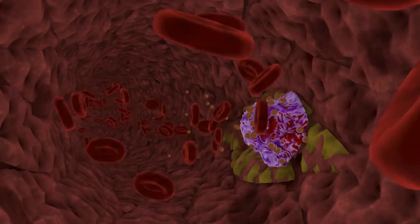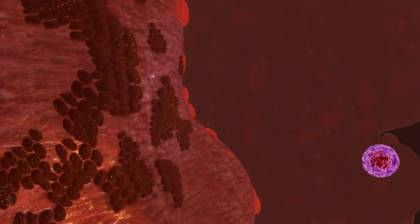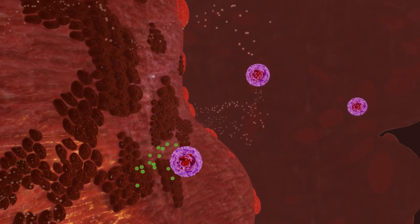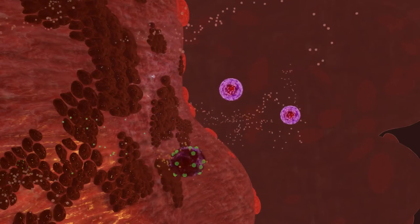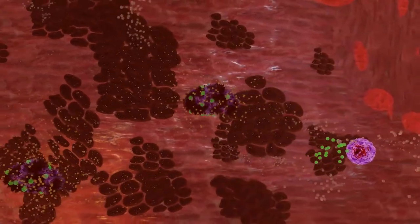Chemoattractants direct the myeloid cells into the tumor tissue. Here, under the influence of tumor cells, tumor-associated fibroblasts and other cells of the tumor microenvironment, the incoming myeloid cells are further reprogrammed.